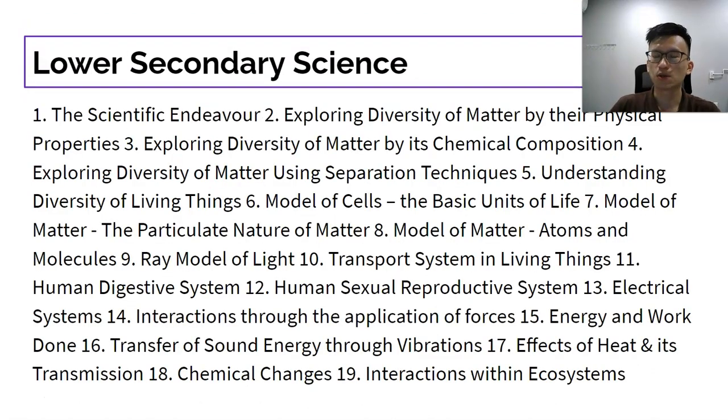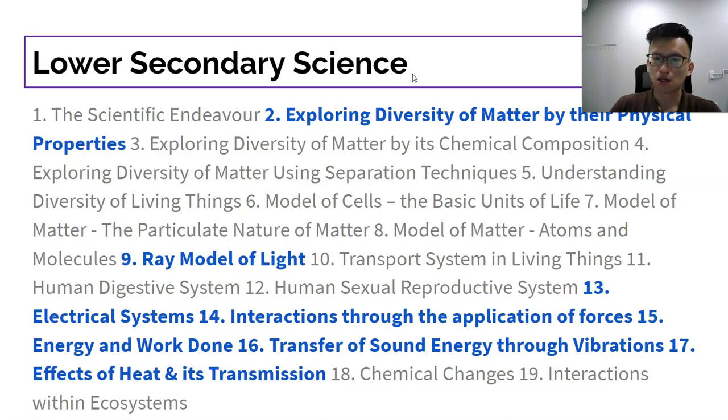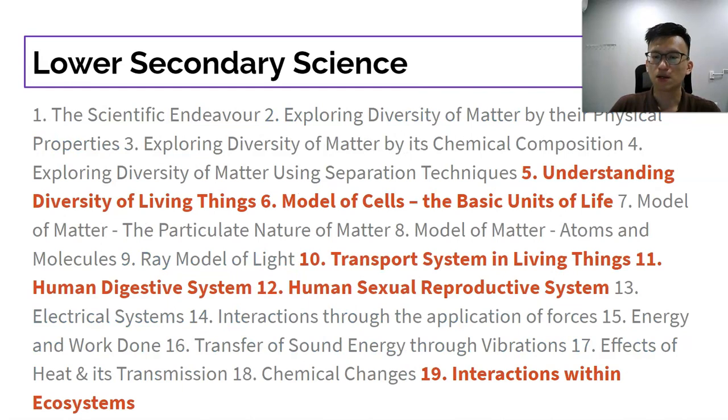This is your lower secondary science syllabus. You see there are 19 chapters. All these highlighted in green are chemistry related topics, in blue are physics related topics, and in red are biology related topics. Over two years you've learned quite a good spread of the three different disciplines of science. The idea is that lower sec science is supposed to give you a good understanding of all three for you to make an informed decision.